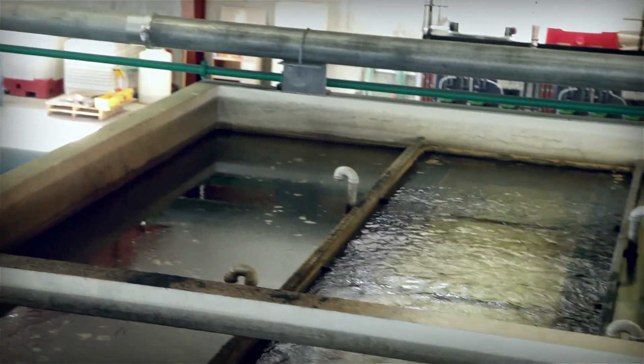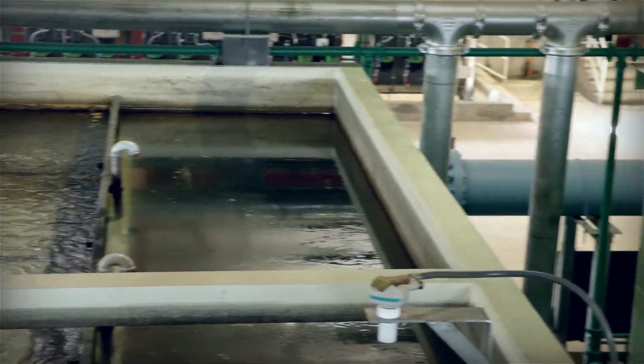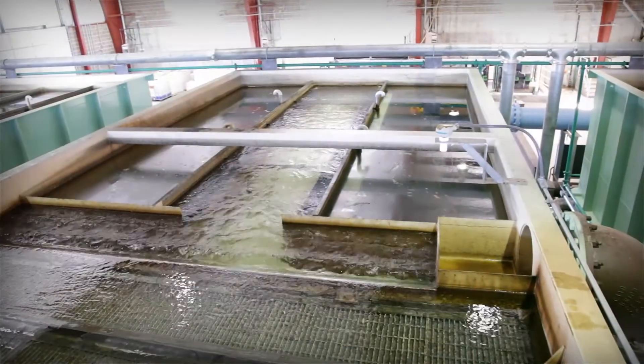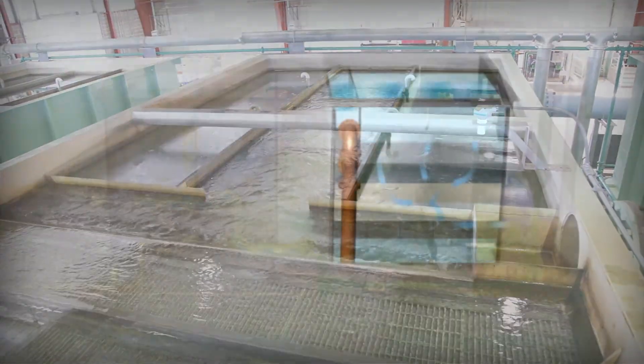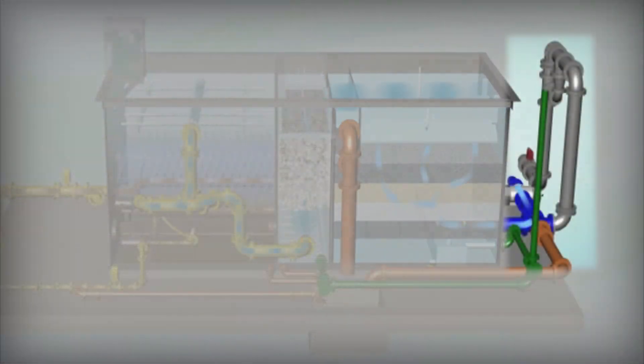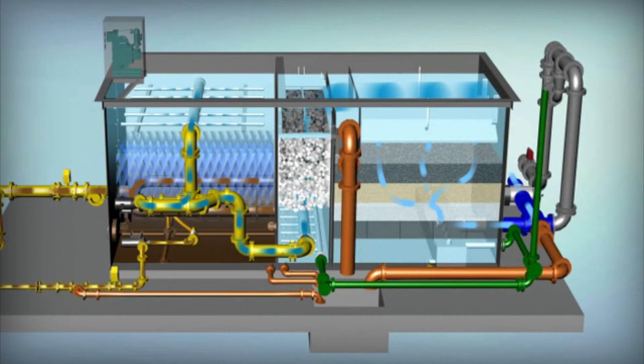After completion of the backwash cycle, the mixed media filter is rinsed to drain, ensuring water quality is met before directing water forward for further treatment and distribution. The optional fourth stage in the Trident HS is disinfection of the filtered water using ultraviolet light.